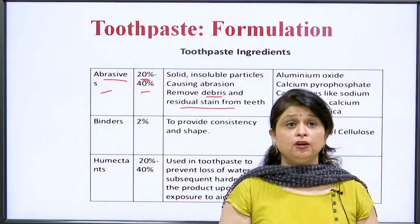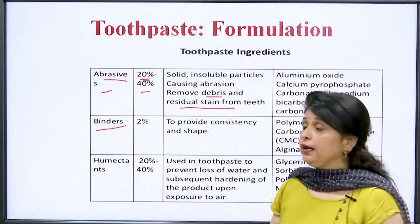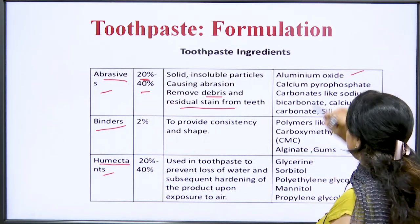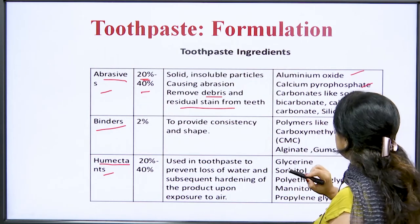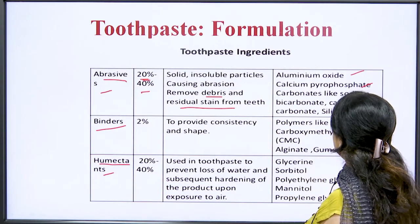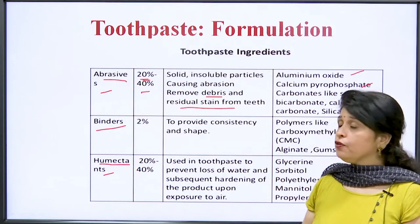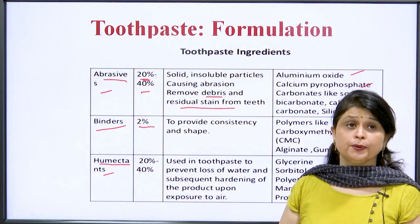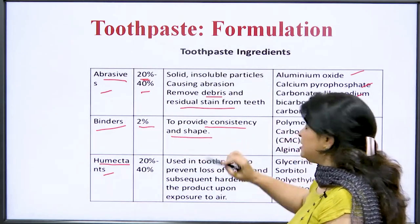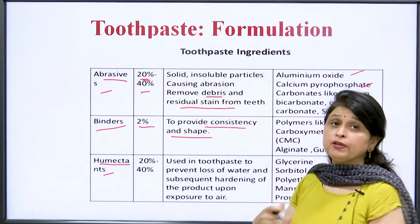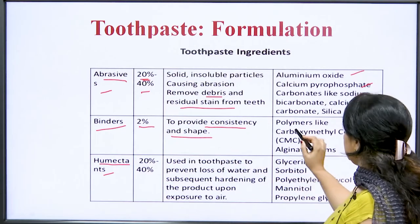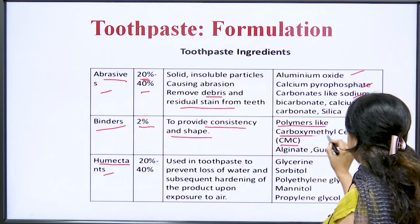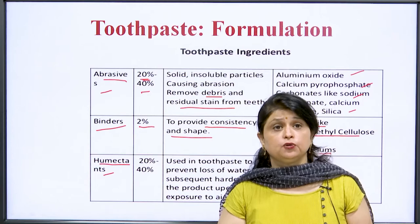Along with abrasive agents, we need to incorporate binding agents, and also add humectants. Binding agents are added at a concentration of 2 percent and they provide consistency and shape to the paste. The consistency of the paste is maintained using binding agents. Examples of binding agents include polymers such as CMC (carboxymethyl cellulose), alginates, and gums.